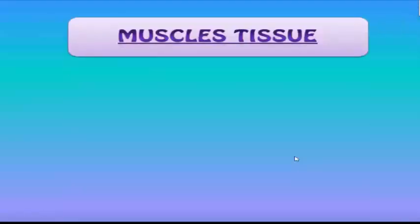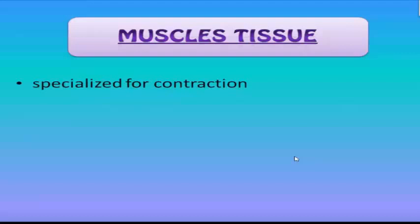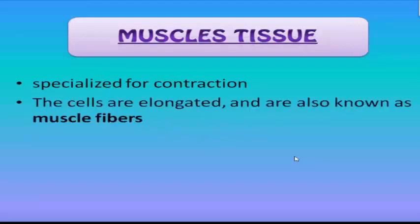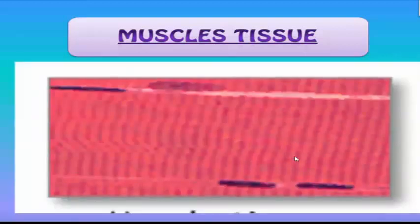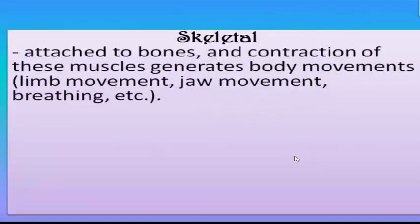The next type of animal tissue is muscle tissue, specialized for contraction. The cells are elongated and are also known as muscle fibers. They contain the contractile proteins actin and myosin, which interact to shorten and elongate the cells. Muscle tissue has three types. The first is skeletal muscle, attached to bones; contraction of these muscles generates body movements such as lip movement, jaw movement, and gripping.